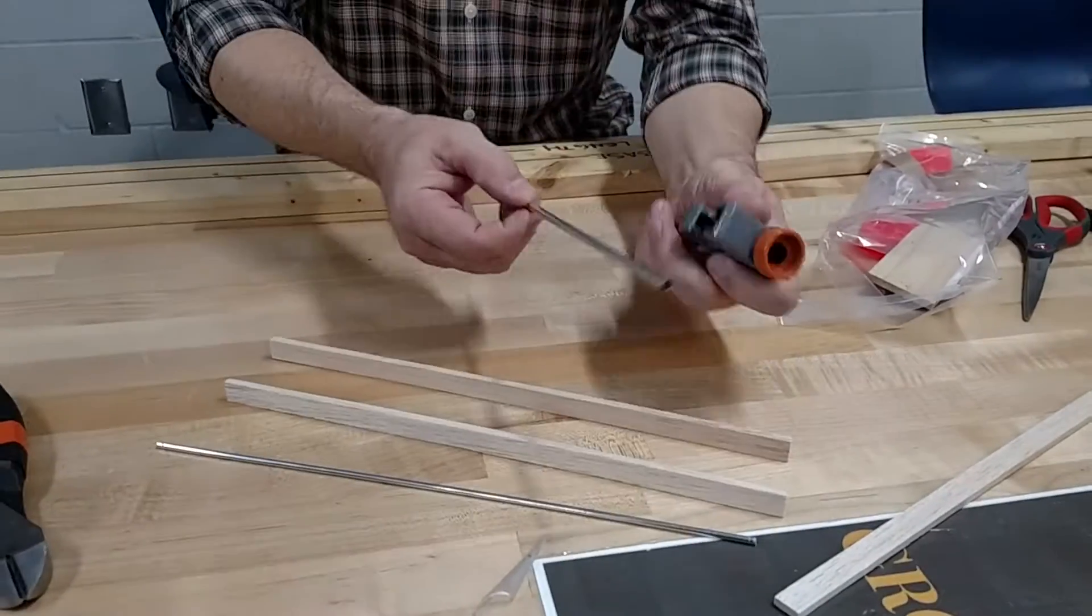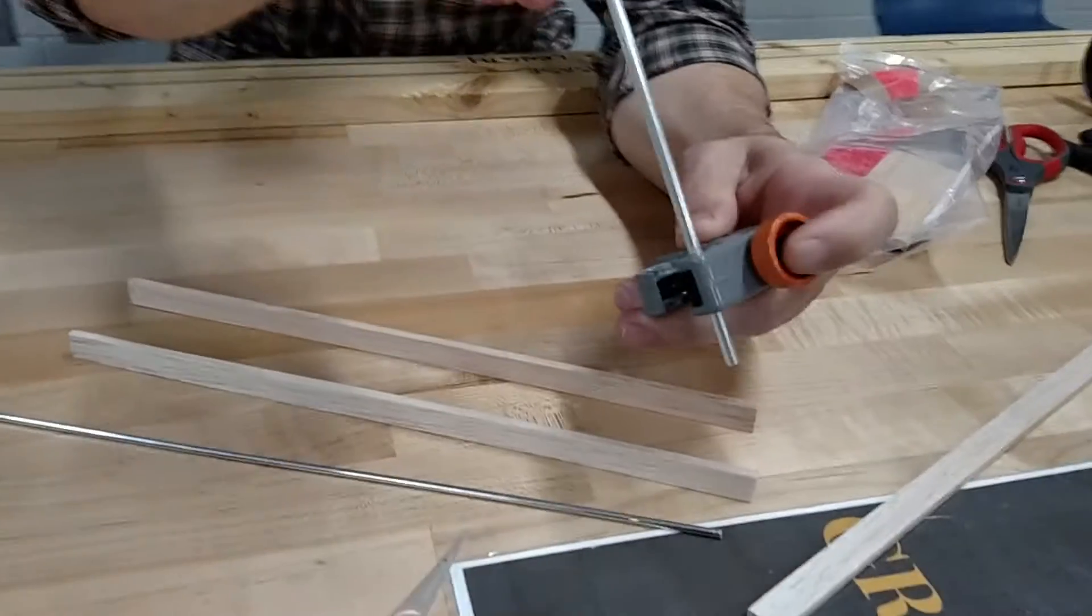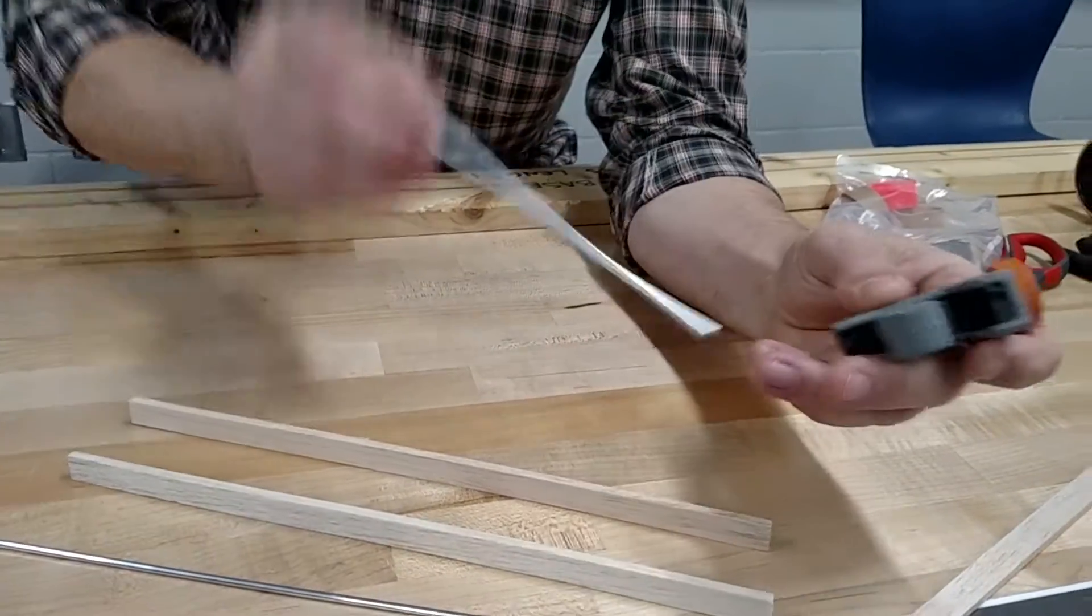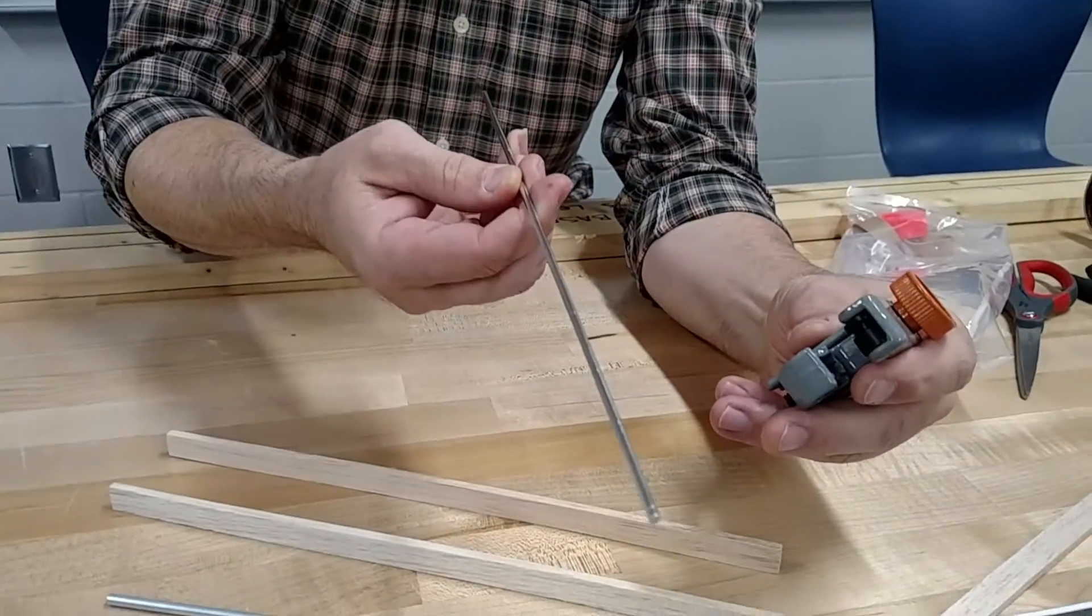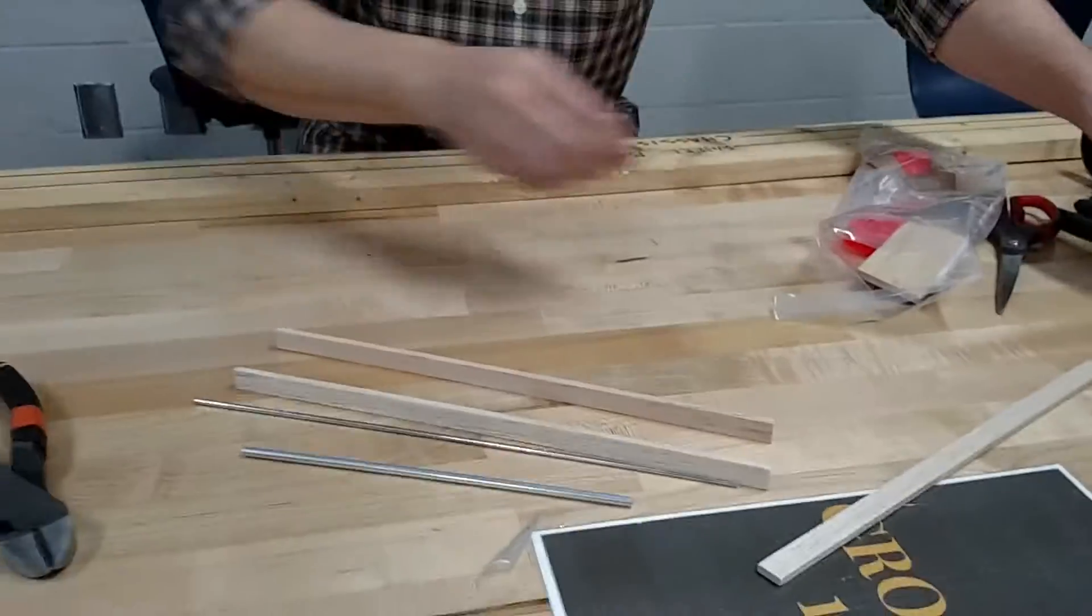It's actually pretty good. So pipe cutter looks like this. And you'll actually measure it, put it in here. It's important not to use a pipe cutter on the solid aluminum.